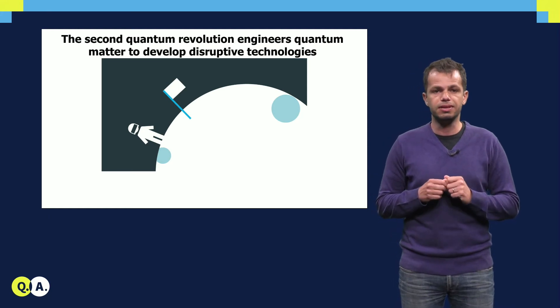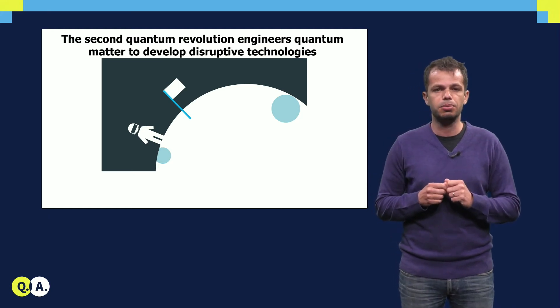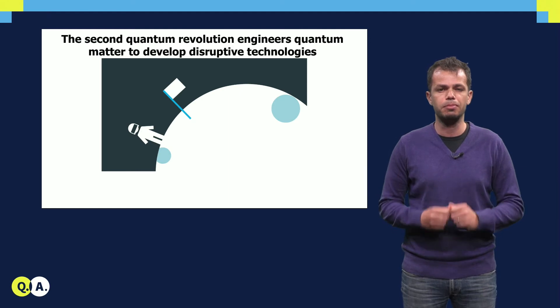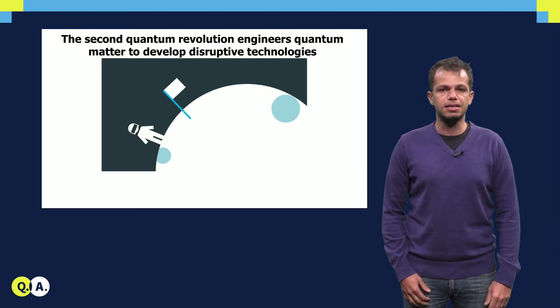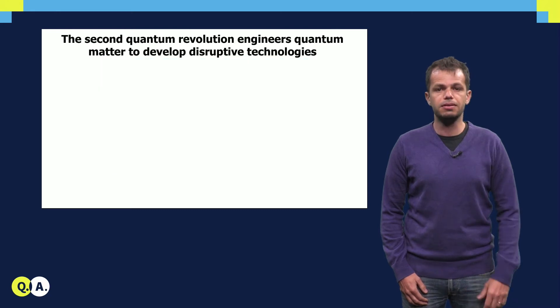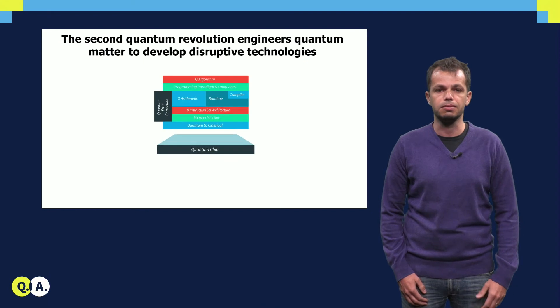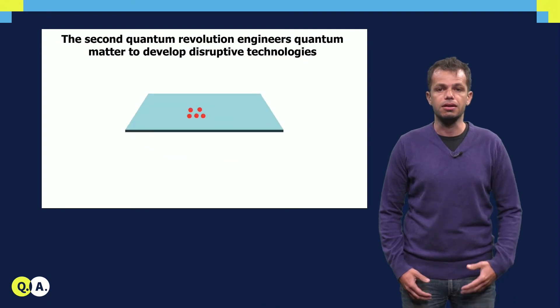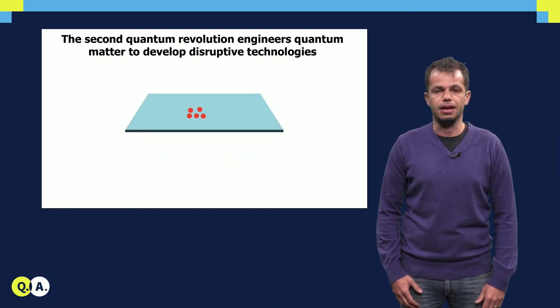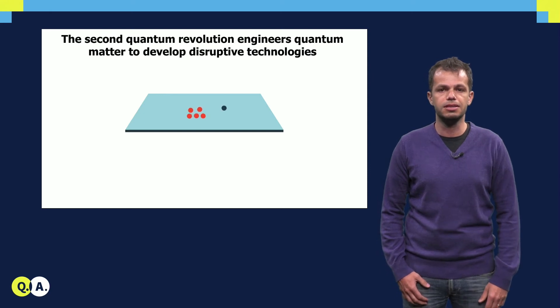By working in a fundamentally different way, quantum computers have the promise of solving complex problems that classical computers cannot handle. Quantum materials provide the environment where qubits, the elemental unit of quantum information processing, are defined and live. Therefore, quantum materials are at the basis of a quantum computer.